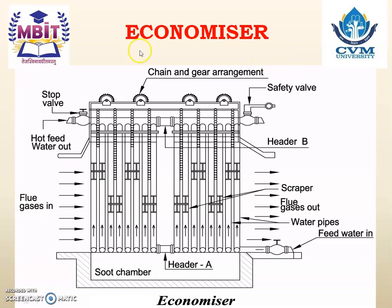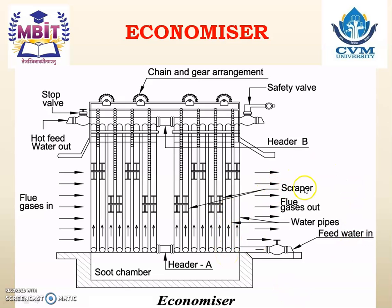The next boiler accessory is the economizer. This is the sketch for the economizer. Looking at the sketch, you can see feed water enters at the bottom and passes through the vertical tubes. From the top, hot feed water is taken out and entered into the boiler. On the left-hand side, flue gases enter, move from left to right outside the tube, and due to those flue gases, the feed water inside the tube is heated. On the right-hand side, the flue gases exit.